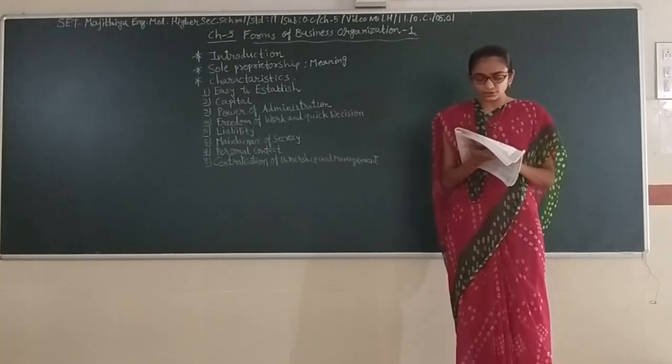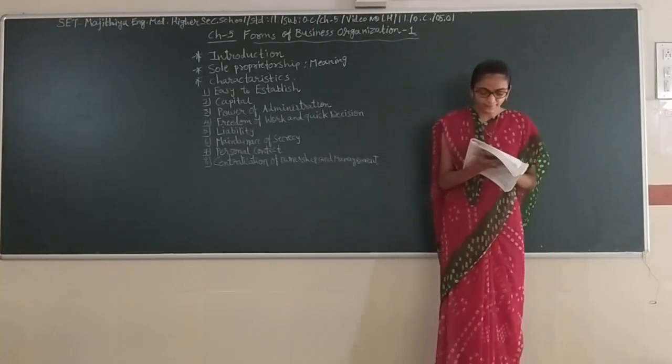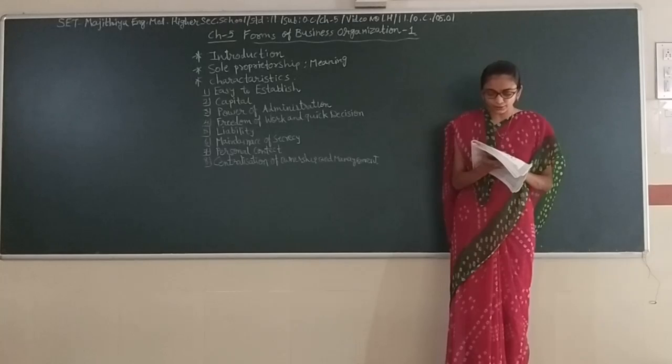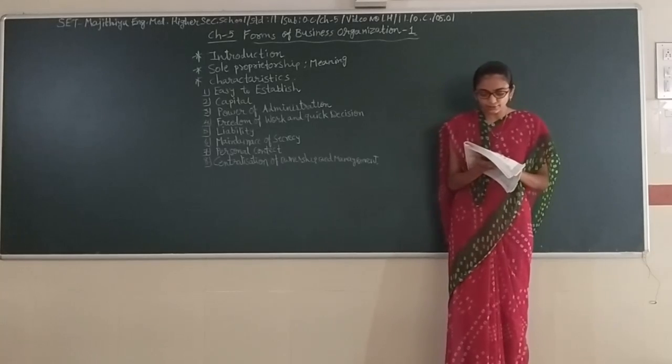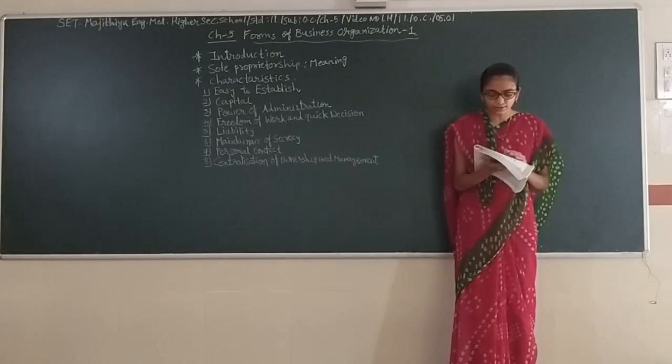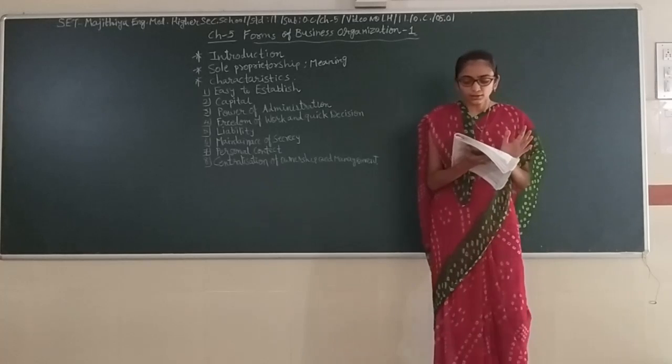For activities of purchase and sale, they introduced different arrangements. Thus, different forms of business organization such as sole proprietorship, partnership, Hindu undivided family, cooperative society, and joint stock companies came into existence one after the other.